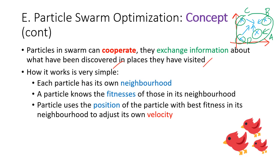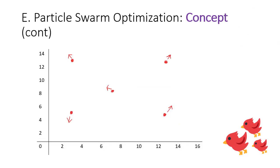The particle then uses the position of the particle with the best fitness in the neighborhood to adjust its own velocity. For example, if particle C currently has the best solution, particle A will adjust its velocity — if it is currently moving to the right, it will change direction to move more to the left, towards the global best.